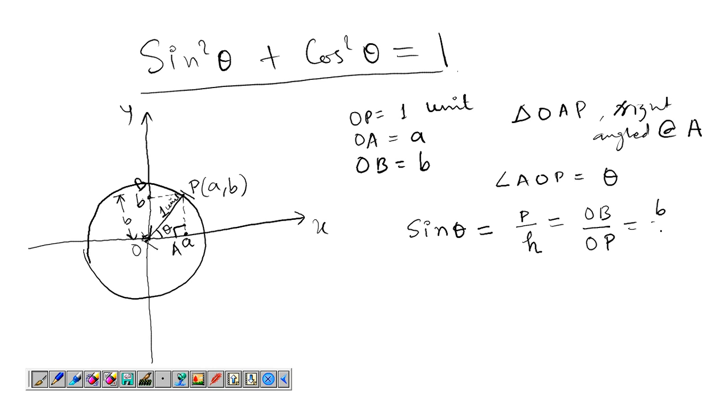So OB is equal to small b and OP is equal to 1 since the radius is unity or 1 unit. So what we get simply is sinθ is equal to b.